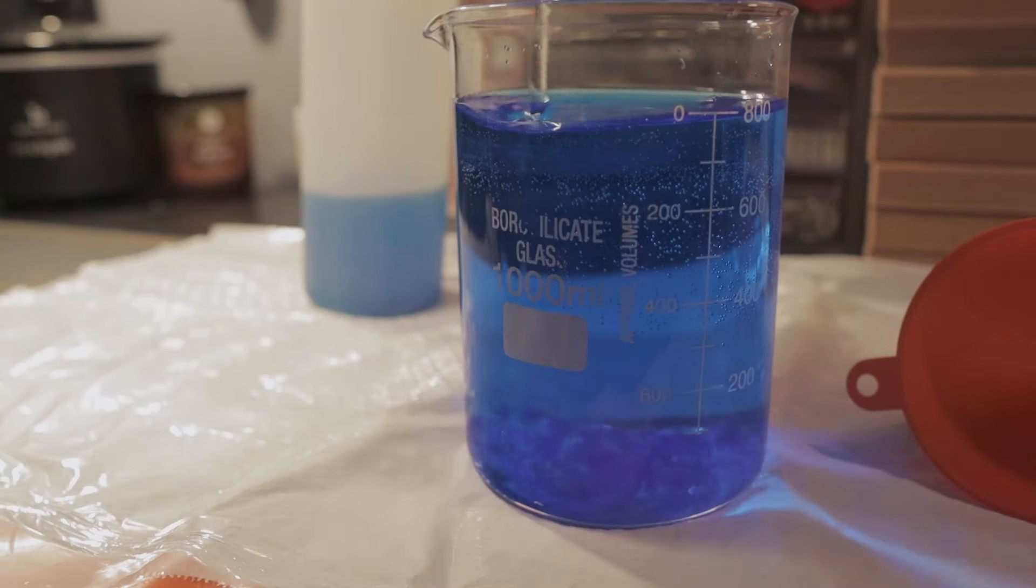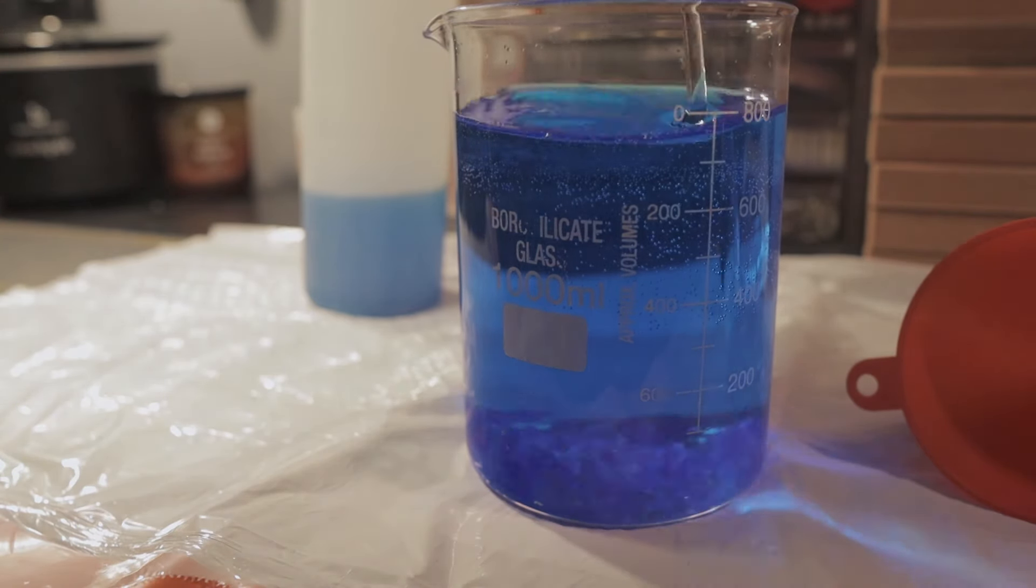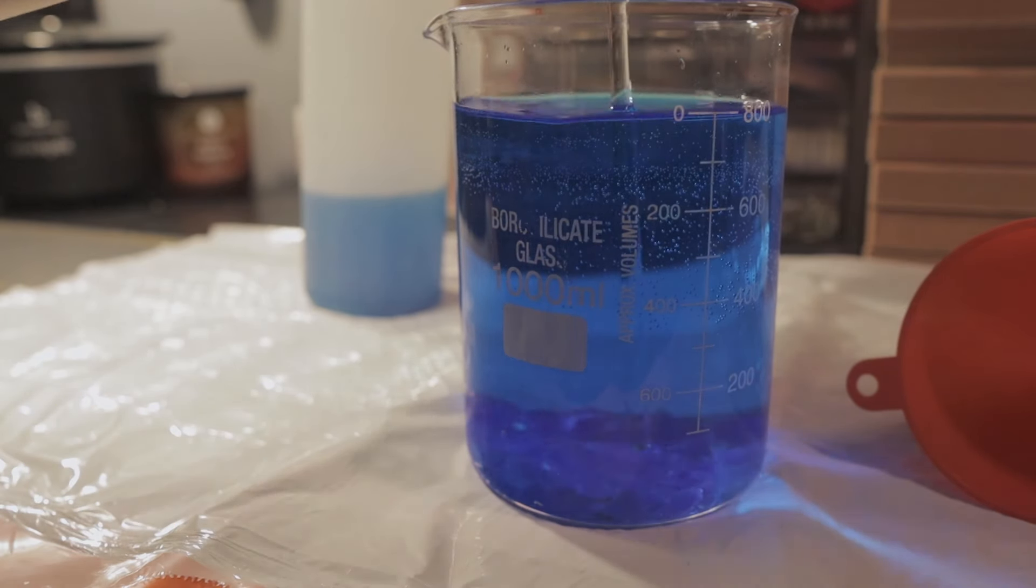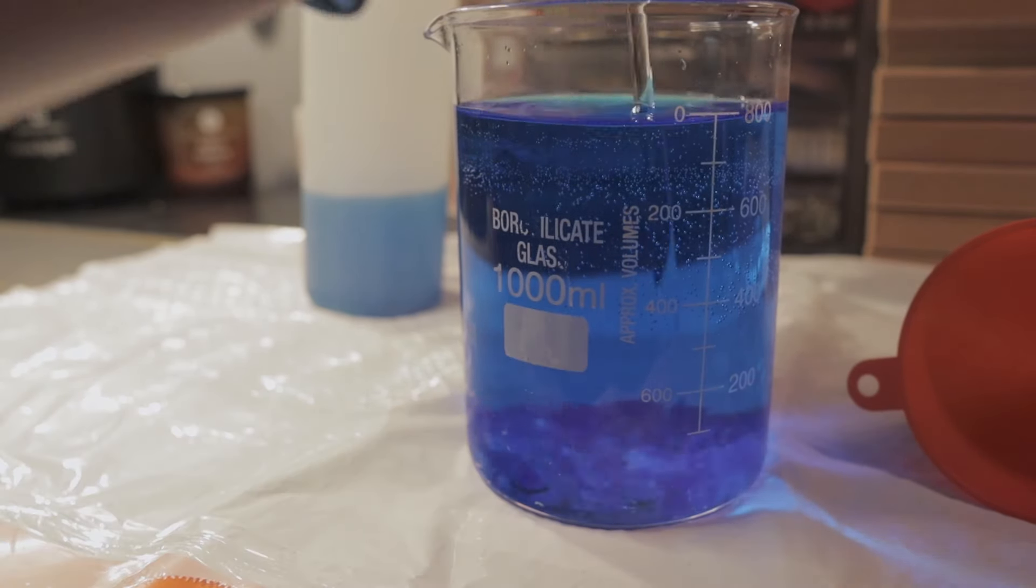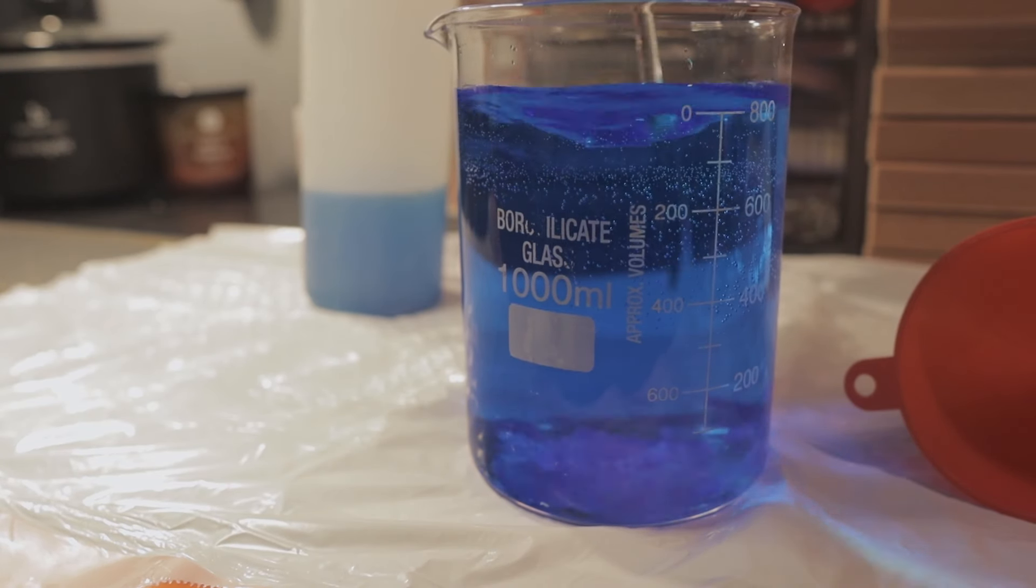Now if you don't have a beaker to be able to do this, you can probably just use a mason jar, some kind of glass container or something. Whatever you use, make sure it now lives in your craft room and lives with your electroforming setup because you do not want to ever use that again for food. It has chemicals in it. I would never trust it again.